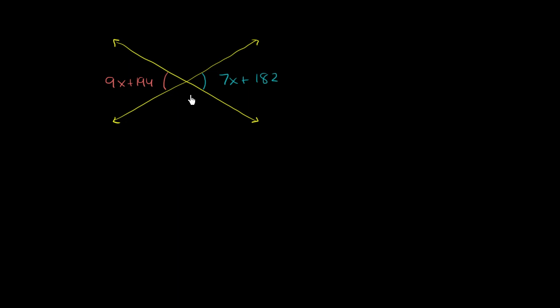Well, the thing that might jump out at you is that these two things are vertical angles. They're the opposite angles when we have these intersecting lines right over here. And vertical angles are equal to each other.